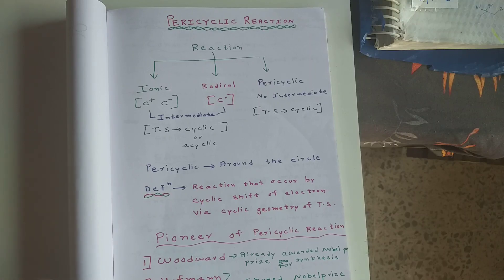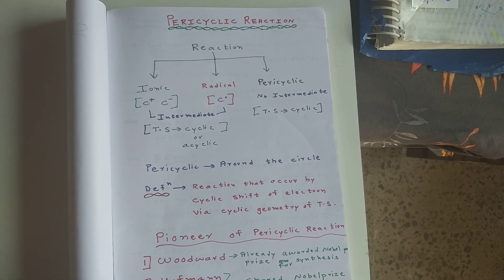Hello. Today we will be discussing pericyclic reactions. Pericyclic reaction is a very important reaction in organic synthesis, particularly for C-C bond formation.